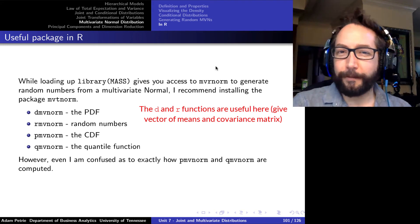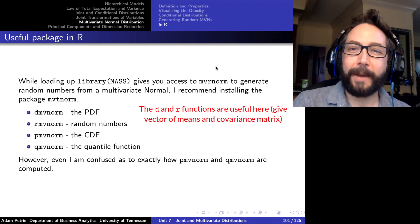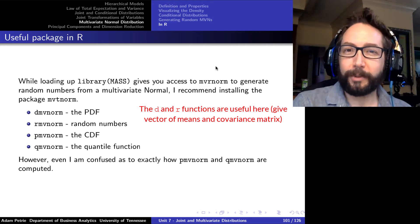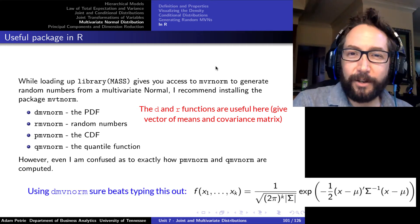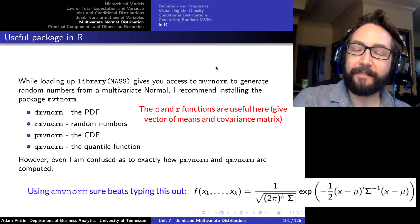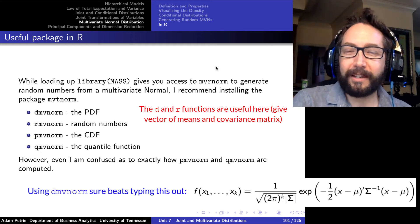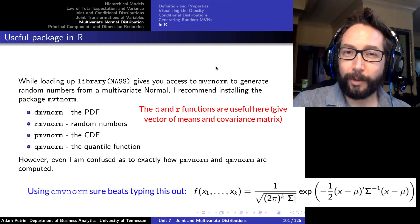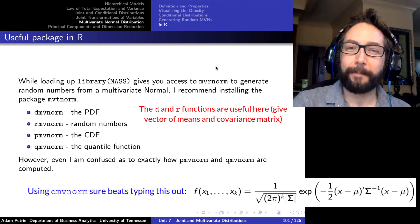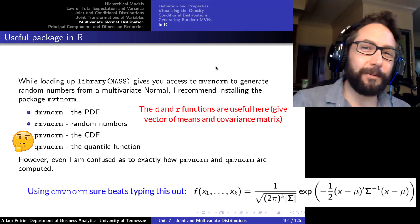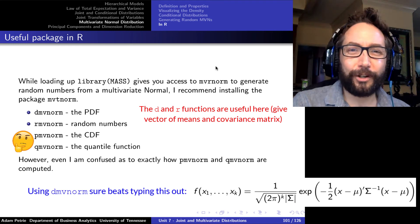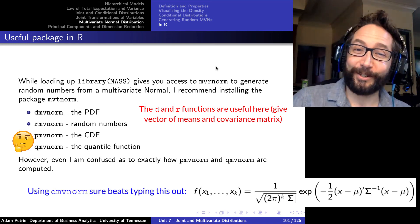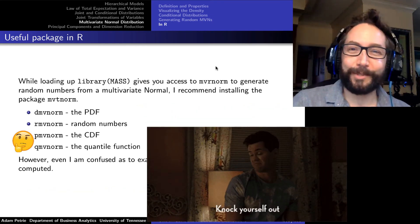There are some useful commands in the MASS package that you can exploit when dealing with the multivariate normal distribution. DMVNORM and RMVNORM are ways to get the values from the PDF and random numbers from a multivariate normal as well. I like the Cholesky method a little bit better. There is a P and a Q version as well. I'm not exactly sure how those are calculated, but it's there. Someone knows how to do it at least.